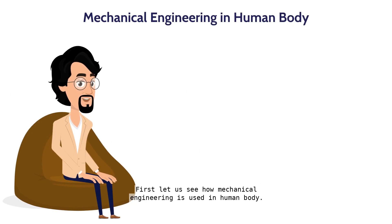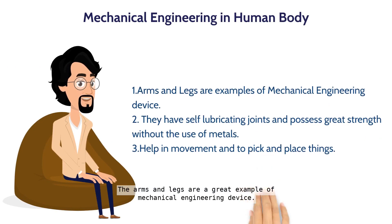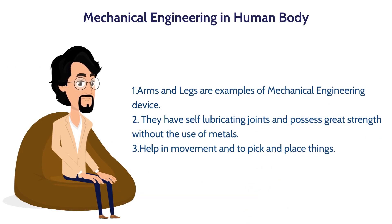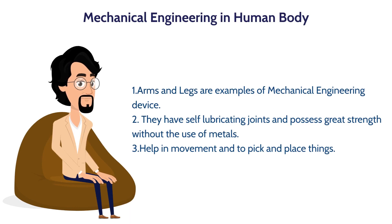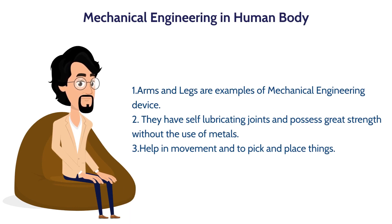First, let us see how mechanical engineering is used in the human body. The arms and legs are a great example of a mechanical engineering device. They have self-lubricated joints and possess great strength without using metals. They help in movement and to pick and place things.